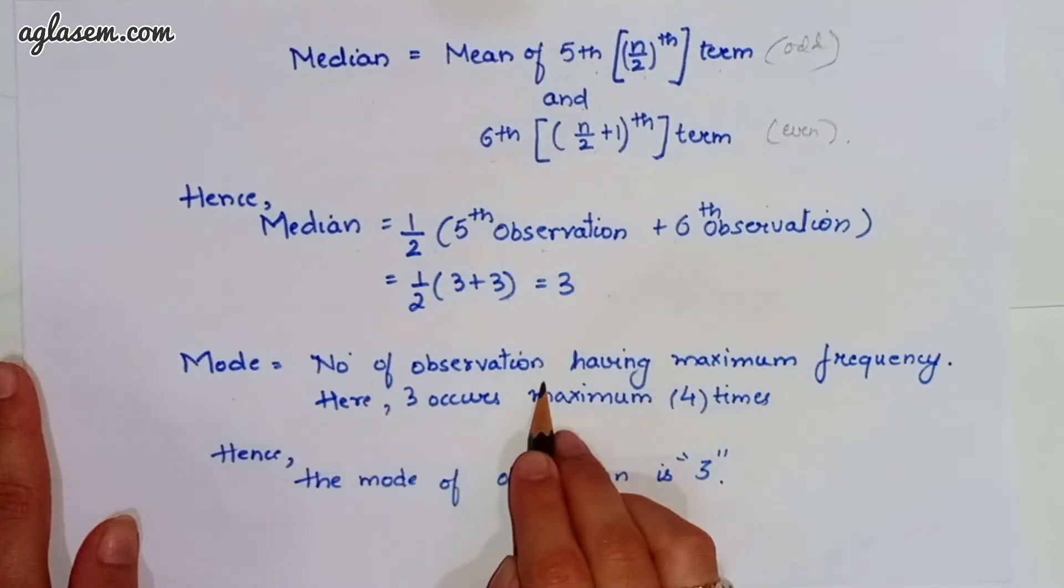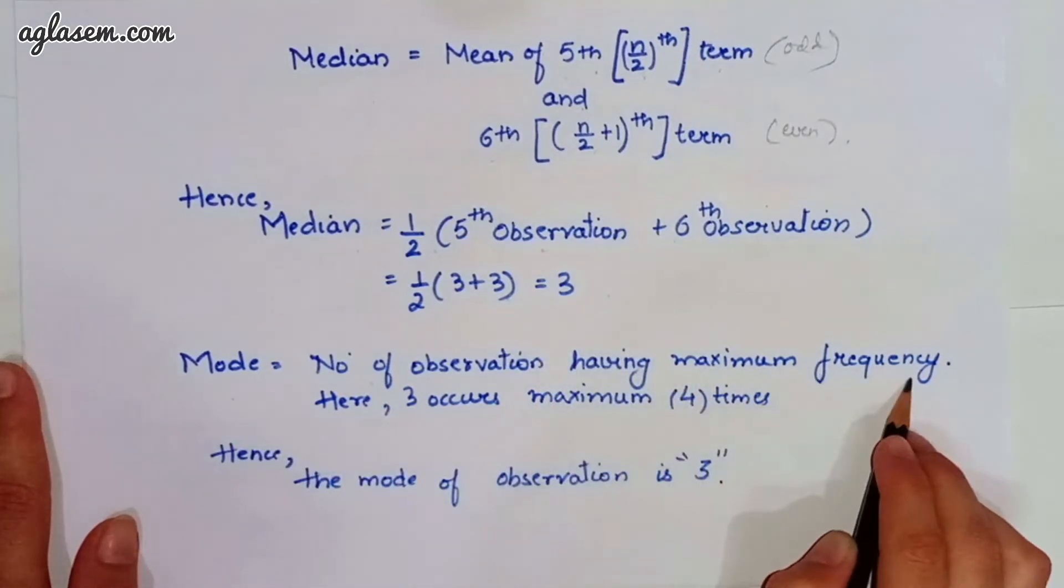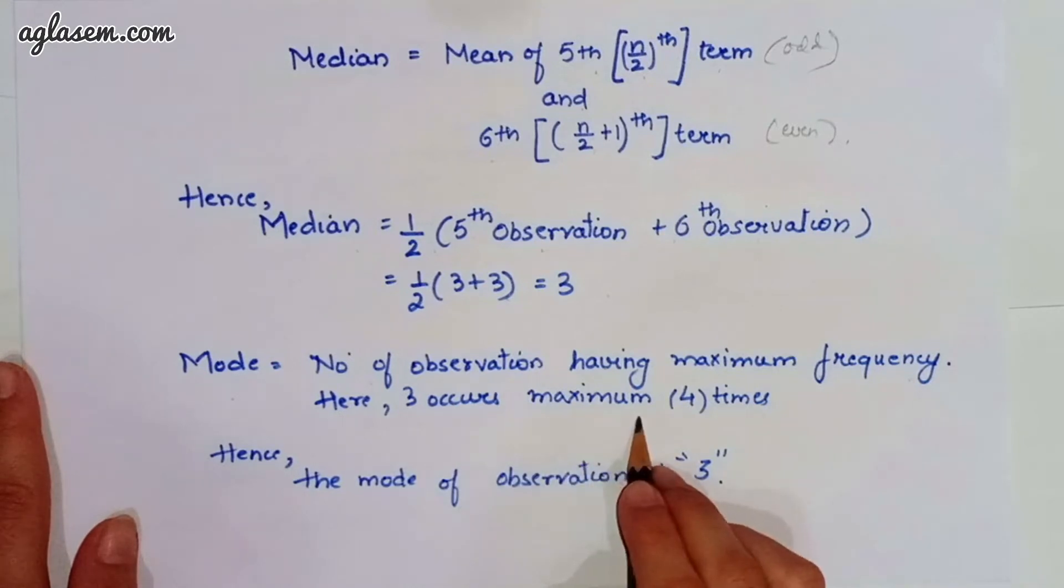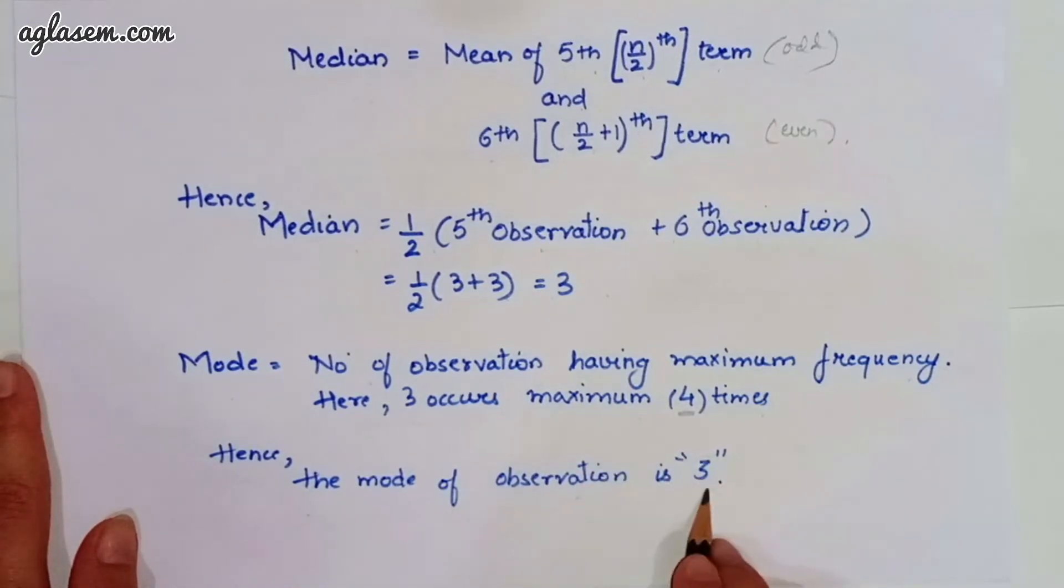So, the mode we can find it as number of observations having maximum frequency. That is, 3 occurs maximum times, that is 4 times. So, the mode of observation is 3.